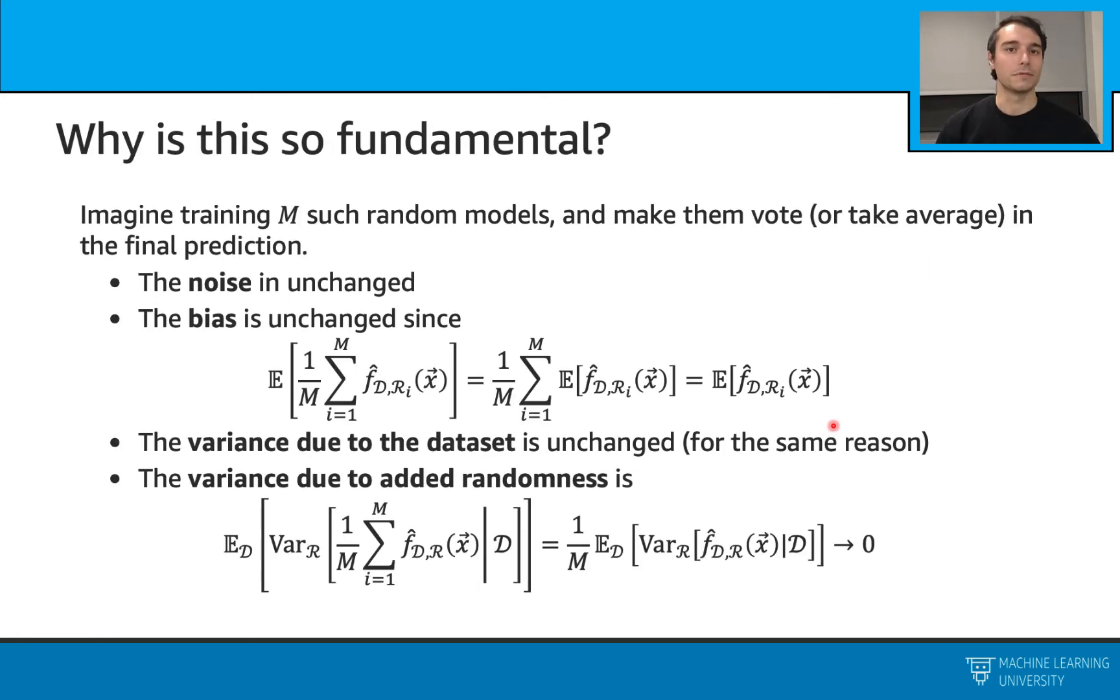So let's continue. Why is this important? Assume we are training m such random models and we make them vote, or we just take the average of those models. In this case the noise doesn't change because it just doesn't depend on anything.